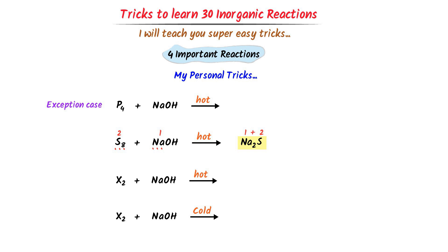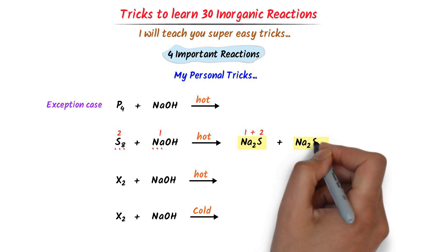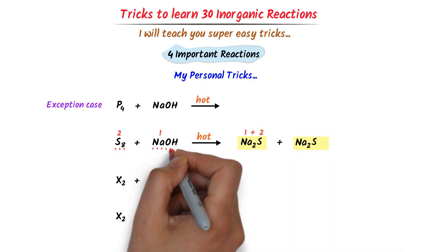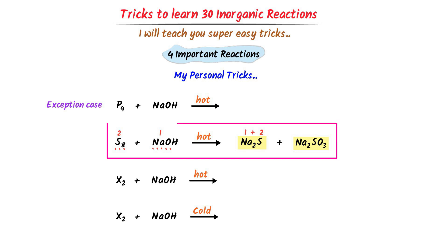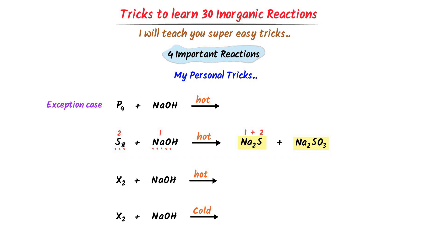Now what about the second product? It is super easy — I write the first product sodium sulfide as it is. There is oxygen in the reactants, so I write O₃ with the second product. Thus when sodium and oxygen react with sodium hydroxide, we get sodium sulfide and sodium sulfite.